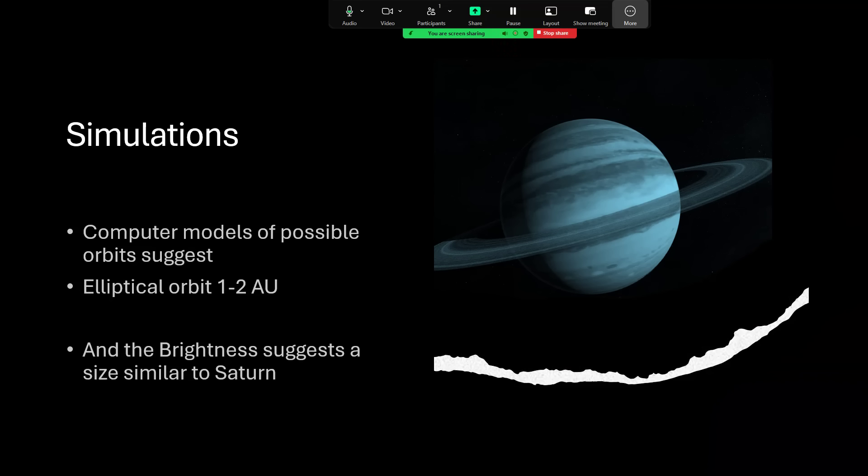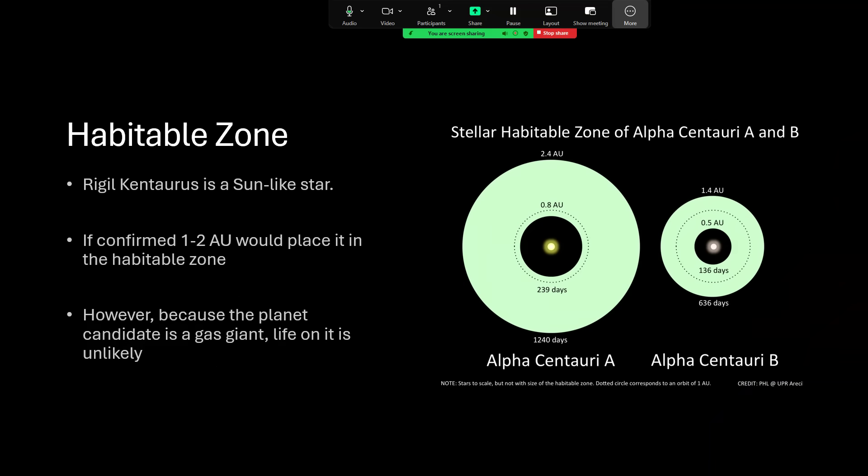And with the brightness of the image that was detected, suggesting a size similar to Saturn, we're talking about a gas giant planet orbiting in the habitable zone. You can calculate the zone around the star where the temperature is going to be such that liquid water can exist. And that's between 0 and 100 degrees C. Hotter towards the center, cooler towards the edge. And for Alpha Centauri A, that zone runs from around about 0.8 AU to 2.4. So an orbit going from 1 to 2 AU puts it in the habitable zone.